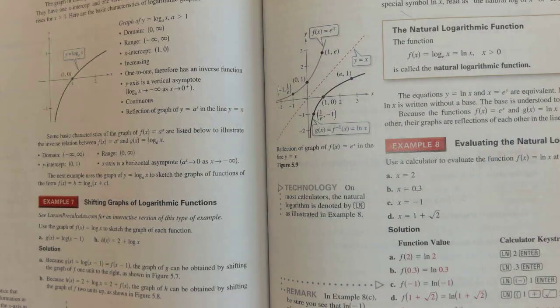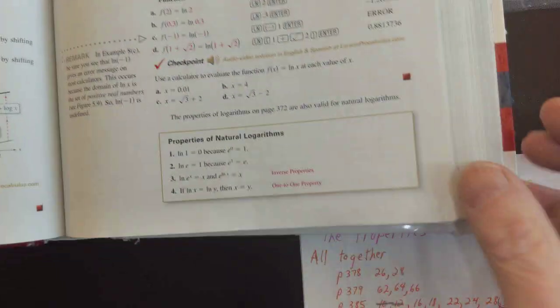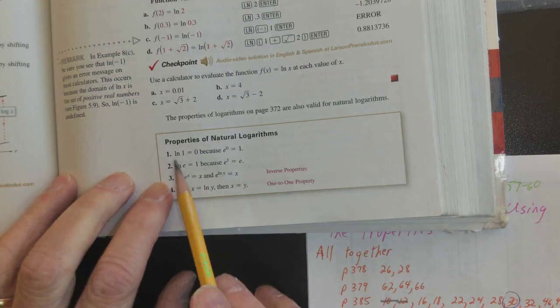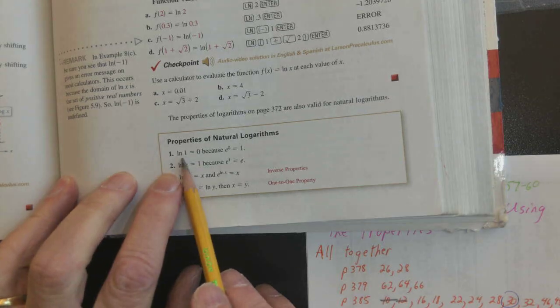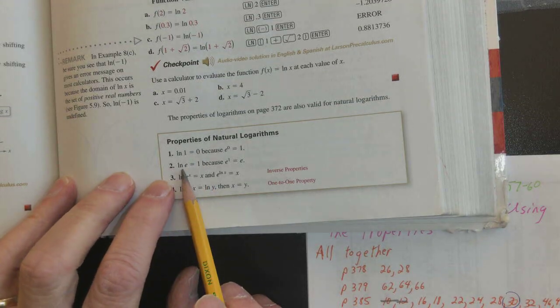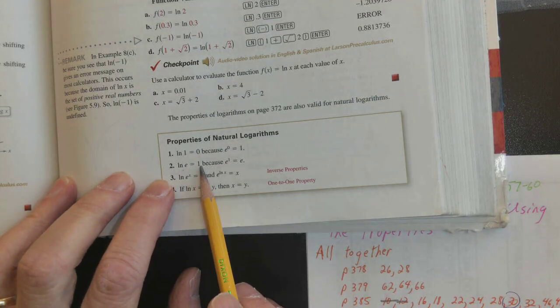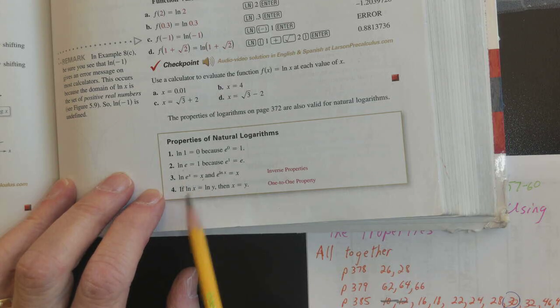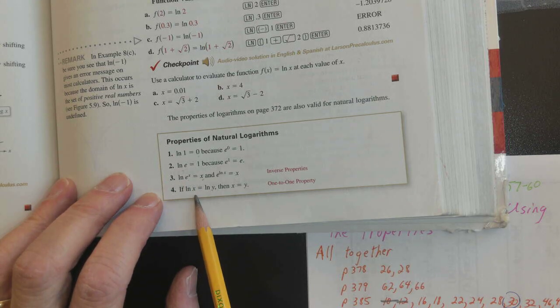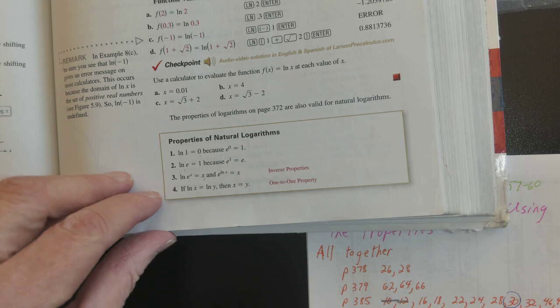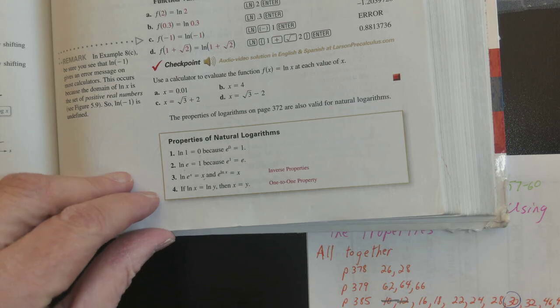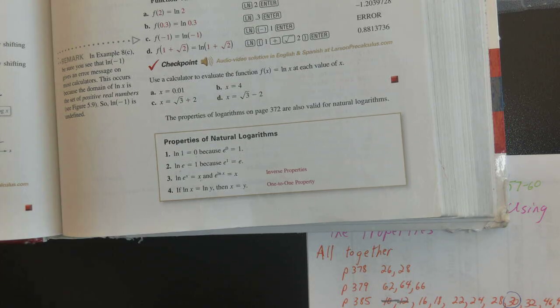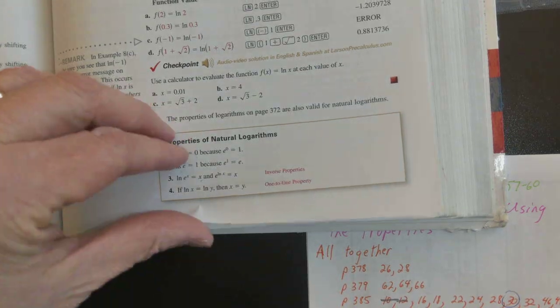And then the parallel natural log: natural log of 1 is 0, natural log of e is 1, natural log of e to the x is x, and if natural log of x equals natural log of y, then x equals y.